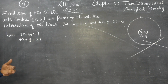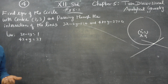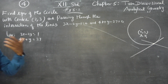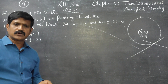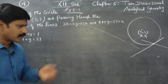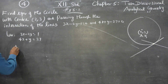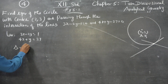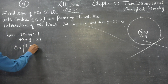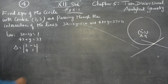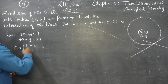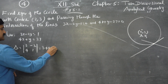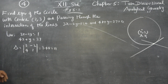Solving these equations, you will get x and y. There are many techniques for 12th standard students — Cramer's rule and the ordinary solving method. Using Cramer's rule: delta equals the determinant of coefficients, which is 3 times 1 minus (minus 2 times 4), giving 3 plus 8, so delta equals 11.